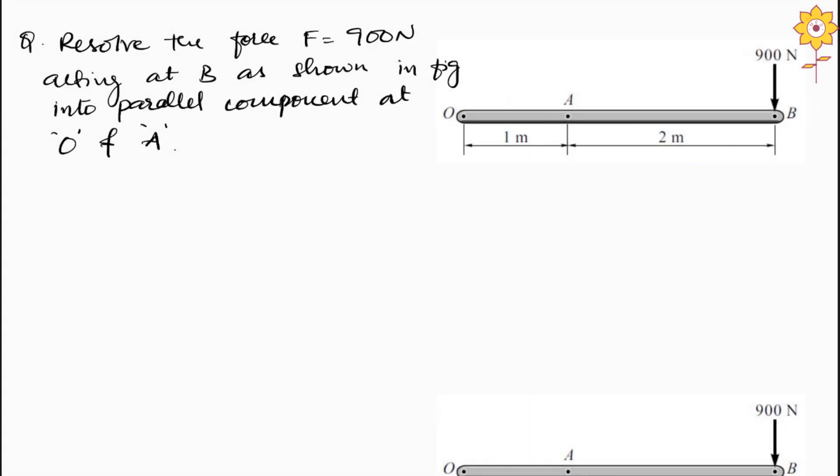Hello everyone, welcome to MES e-learning channel. In this video we will sort a different type of problem on resultant of parallel force system. In the given question they have said: resolve the force F equal to 900 newton acting at point B, as shown in the figure, into a parallel component at point O and A.